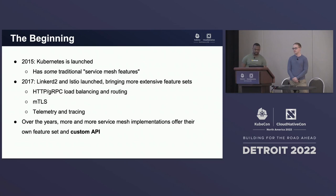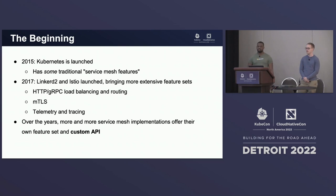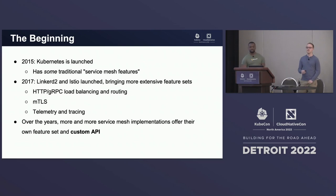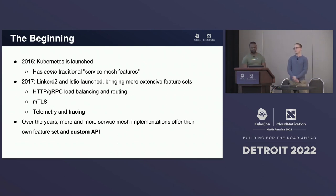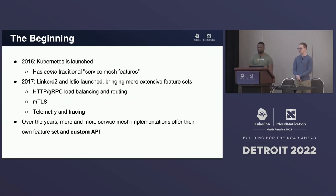Pretty shortly after, new service mesh products started popping up. Linkerd2 and Istio were some of the first ones, bringing things like HTTP and gRPC load balancing and routing, mTLS, telemetry and tracing, and much more. Over the years, a lot of other products started popping up as well, giving more and more service mesh implementations, each one offering their own feature set and custom API.